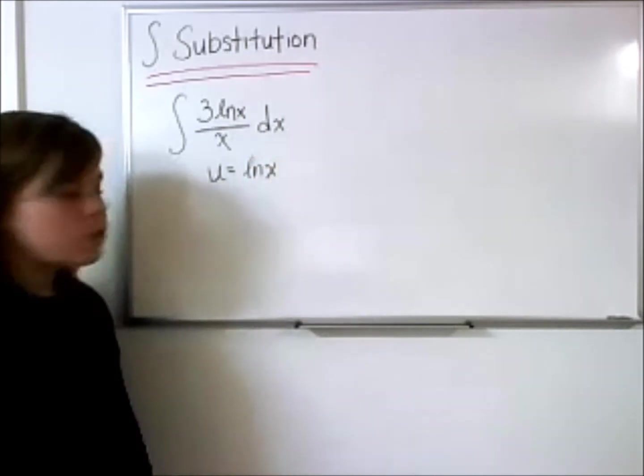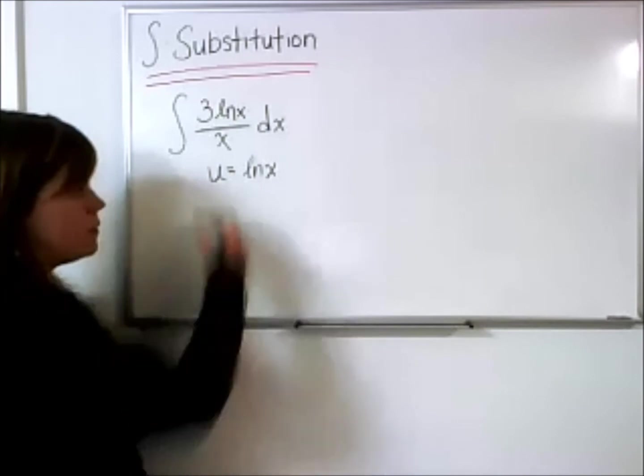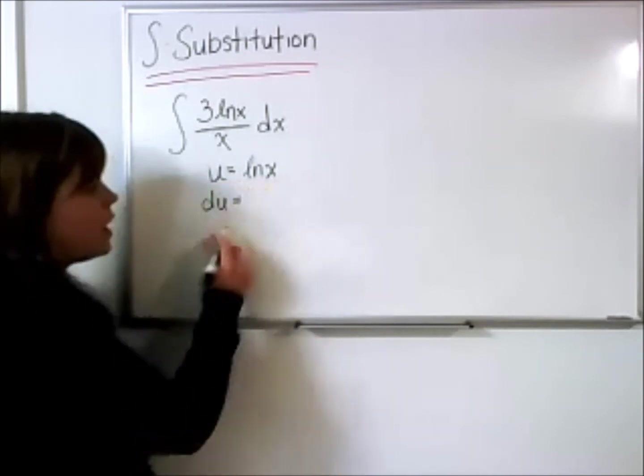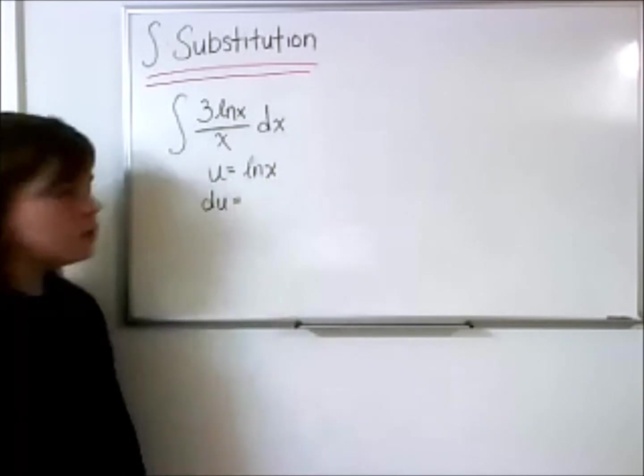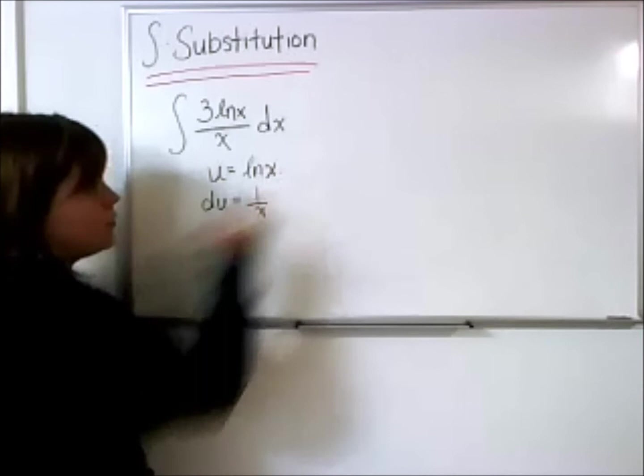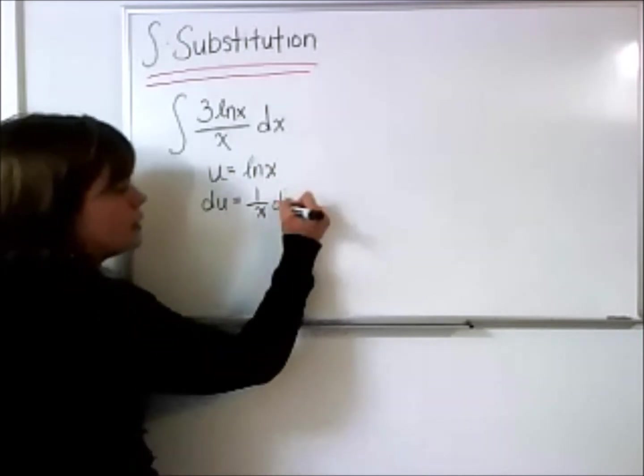Once we have done that, what we're going to do is take the derivative of this function, and on the left side, we get du, and on the right side, we'll get 1 over x, so the derivative of the natural log of x, times dx.